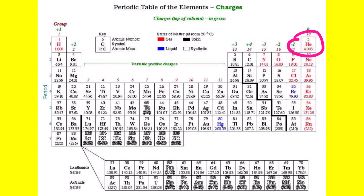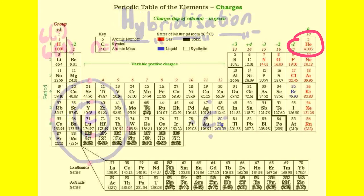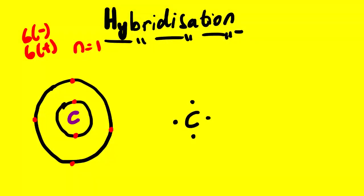With this information, we said in the last lesson video that the first energy level has the s orbital and the second energy level has the s and the p orbital. The mixing of these orbitals is called hybridization — they mix so that it is possible for atoms to actually bond.